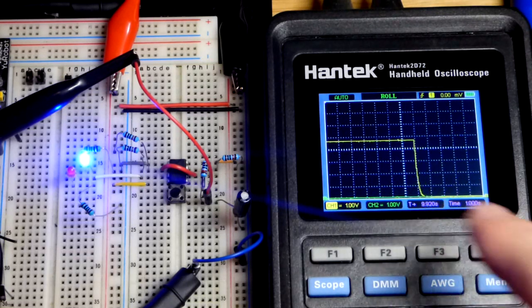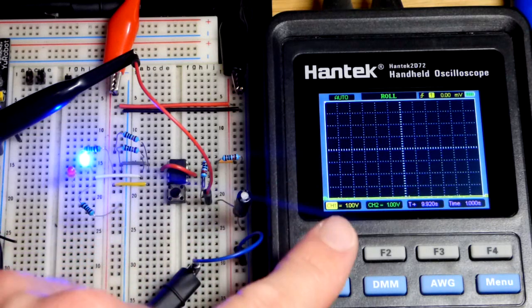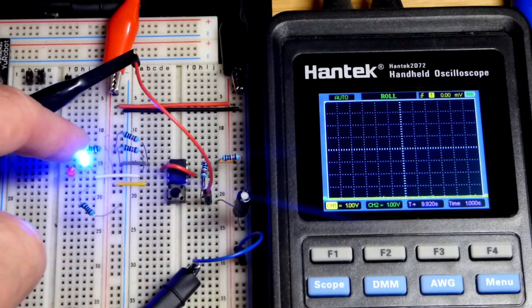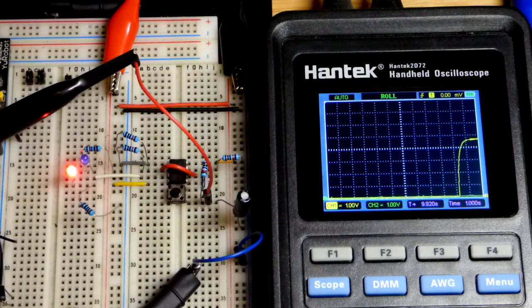When I press the button right there, you can see in much less than a second - I wrote five seconds in the diagram but I made that a while ago - the capacitor discharges really quickly, output is low and it stays low.